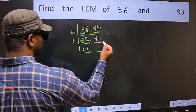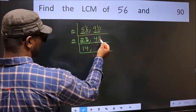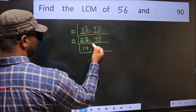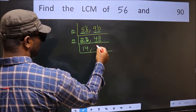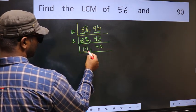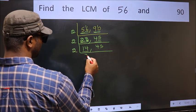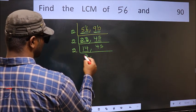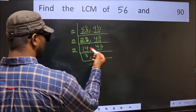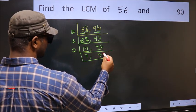Now the other number is 45. The last digit is 5, which is not even, so this is not divisible by 2. So you write it down as it is. Now here we have 14. 14 is 2 sevens, which is 14. The other number 45 is not divisible by 2, so you write it down as it is.